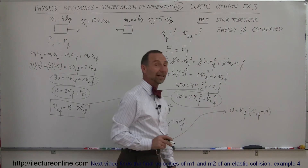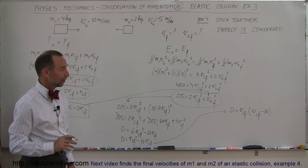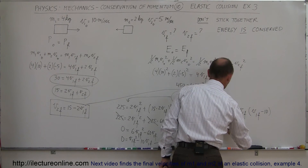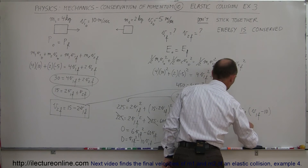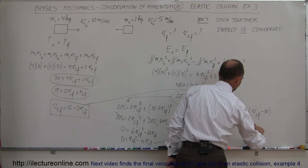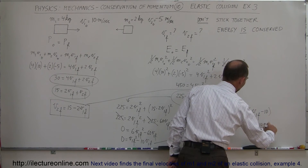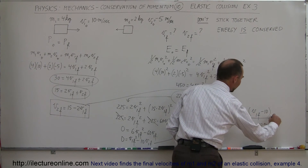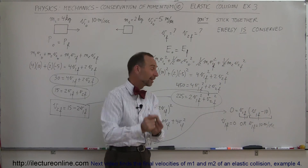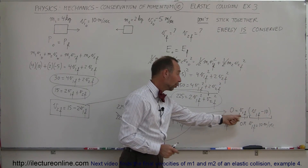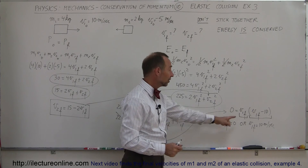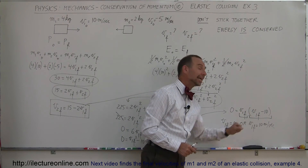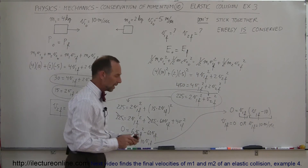That's easy to solve without the quadratic formula. Either V1f = 0 or V1f − 10 = 0, meaning V1f = 10 meters per second. Those are the two possible solutions.